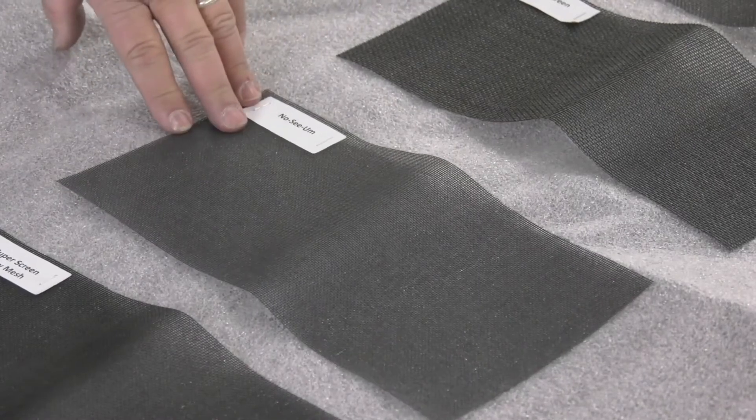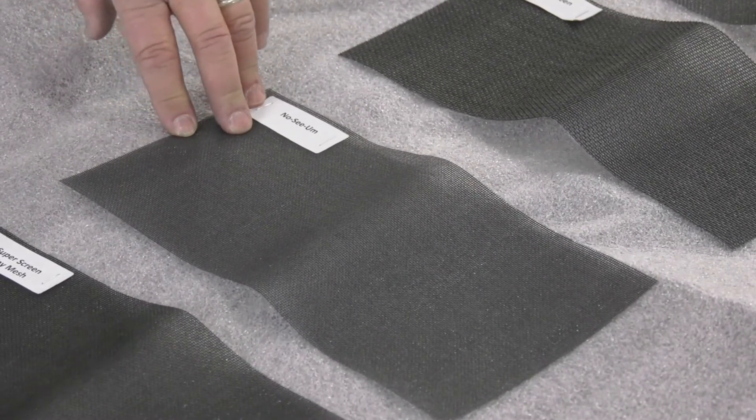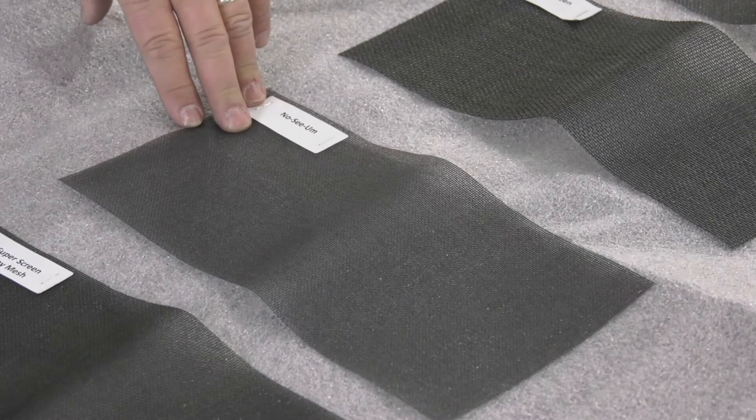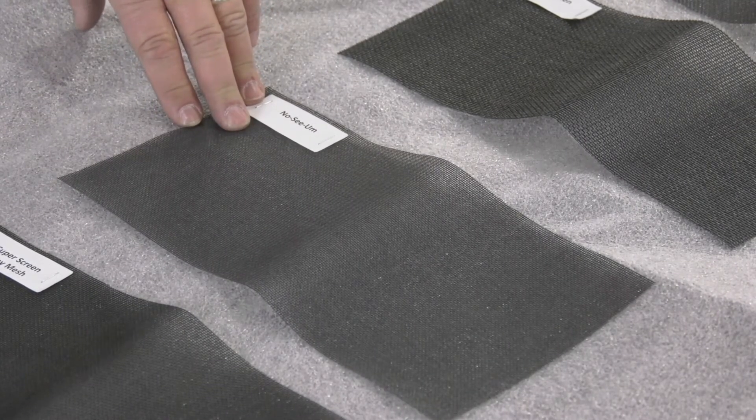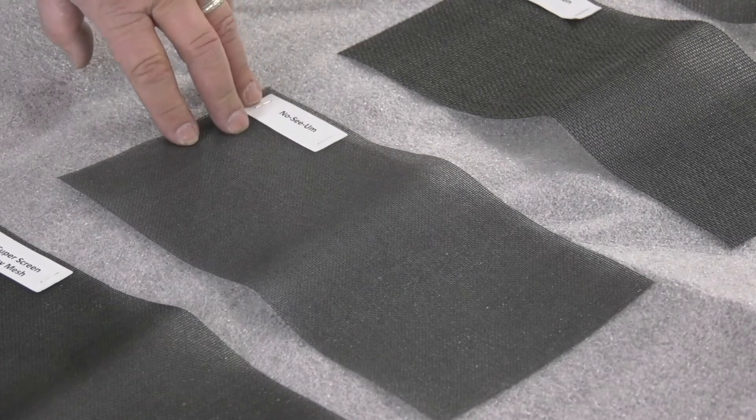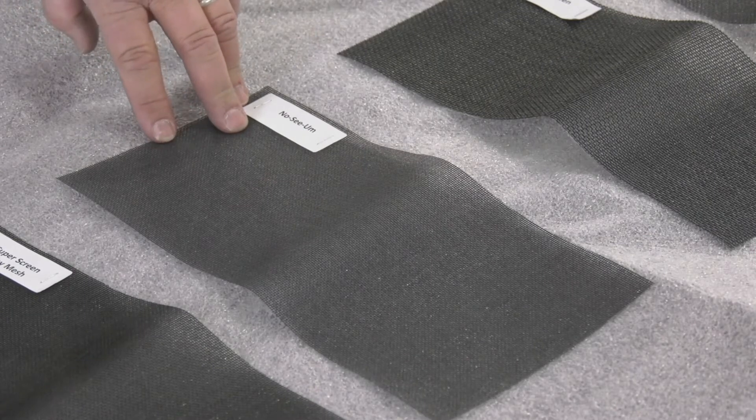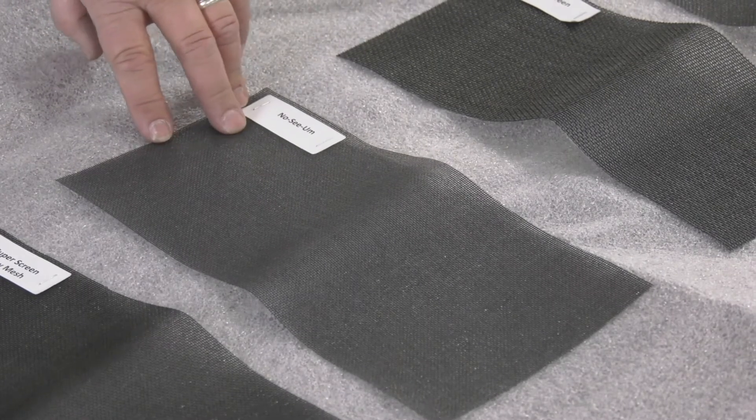Next is the no-see-um product. This is designed to protect against smaller or tiny insects, and it can be used for larger pool and patio closures. It provides good ventilation. It's a 20 by 20 mesh. It installs with a 0.310 flat spline, and it's available from 3 foot to 108 inch wide rolls.